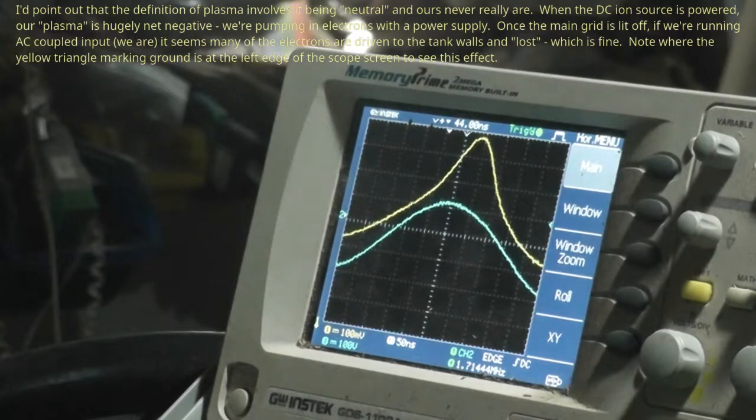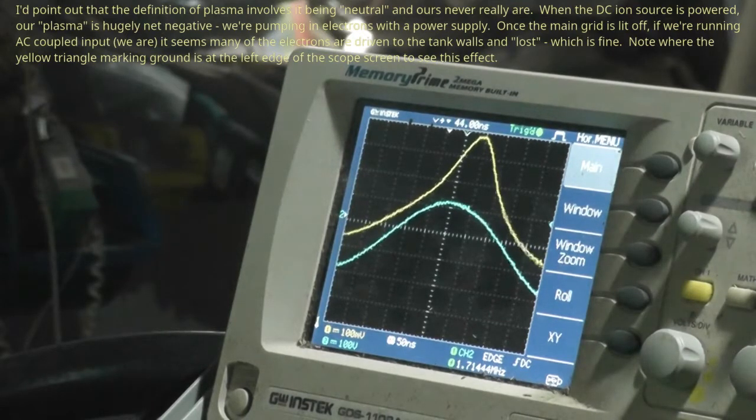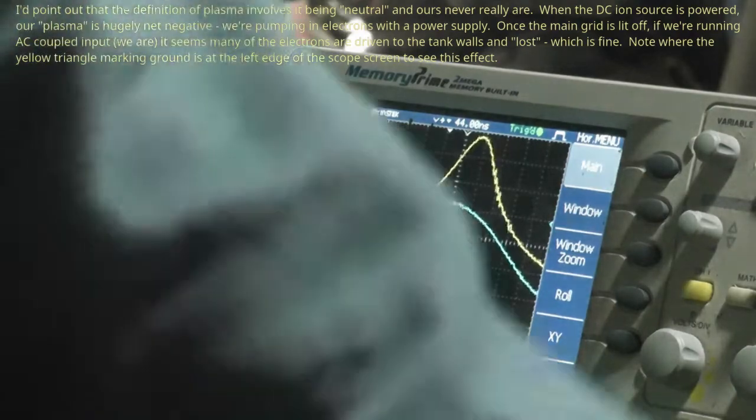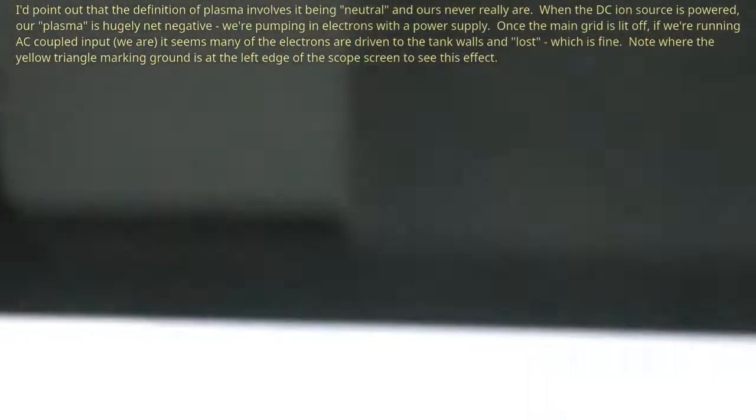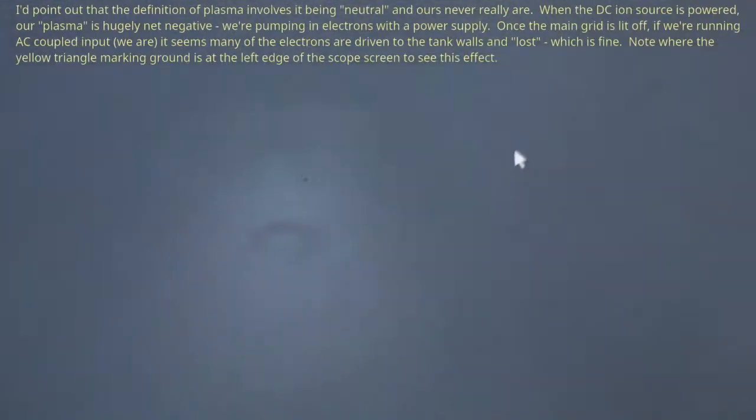And we're pushing ions around. We're actually getting them to go back and forth and stuff. And at 3 kV, we're not doing it hard enough to make them have fusion. We probably have the wrong geometry and everything else in the world. The grid is actually lighting up under this AC drive.